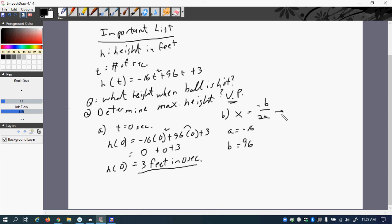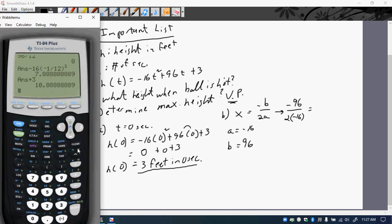So we'll put that in. Negative 96 divided by 2 times negative 16. So now we'll go ahead and do that on our calculator. So we'll go here, clear.